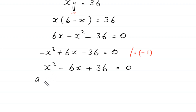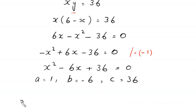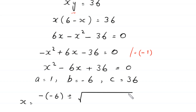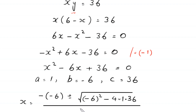In this equation we have a equals 1, b equals negative 6, and c equals 36. According to the quadratic formula, x equals negative b plus or minus the square root of b squared minus 4ac, all divided by 2a. Substituting: x equals negative times negative 6, plus or minus square root of negative 6 squared minus 4 times 1 times 36, divided by 2 times 1.